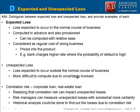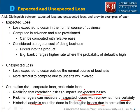Correlation risk can significantly impact unexpected losses. Because of this uncertainty, unexpected losses can increase. If you model correlation risk into your unexpected loss calculations, you can measure them with more certainty. Historical analysis can also help identify losses that have occurred due to correlation risk.